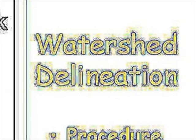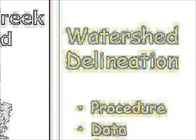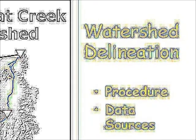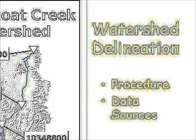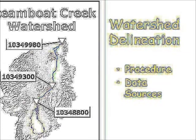Let's take a look at watershed delineation. The procedure involves using a topographic map, usually a 1 to 24,000 scale, to identify an area that contributes water to a flow system.